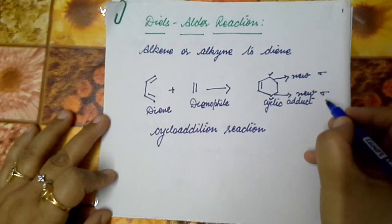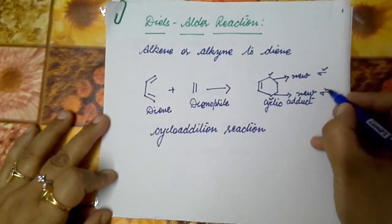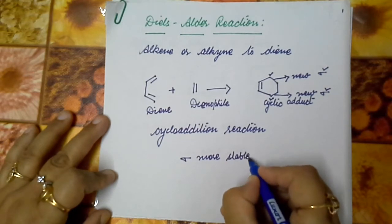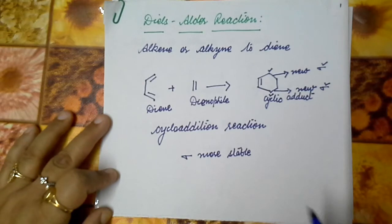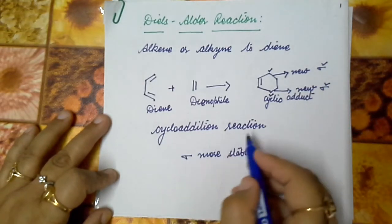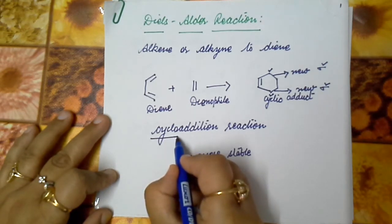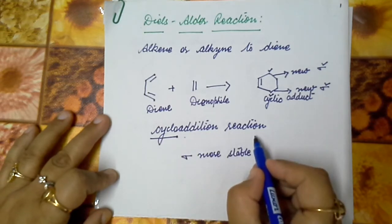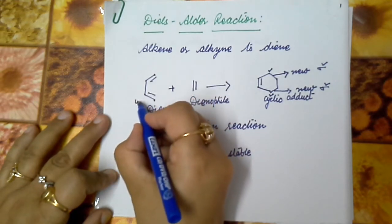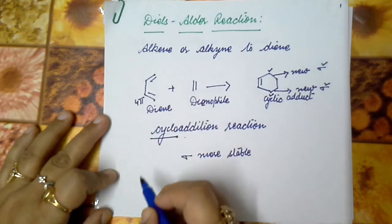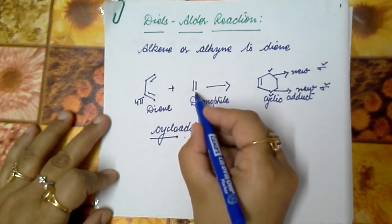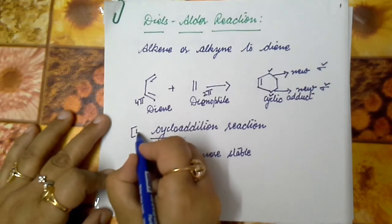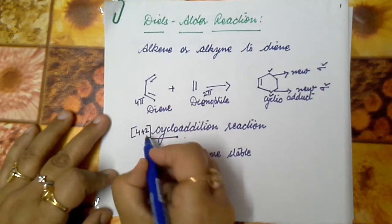What favors the reaction towards the forward direction? That is the formation of the sigma bonds, because sigma bonds are always more stable than pi bonds. This reaction is also known as a cycloaddition reaction because there is a formation of a cyclic ring — cycloaddition because addition takes place. There is an involvement of 4 pi electrons from the diene's two double bonds and 2 pi electrons from the dienophile. That is why this reaction is also known as a 4+2 cycloaddition reaction.